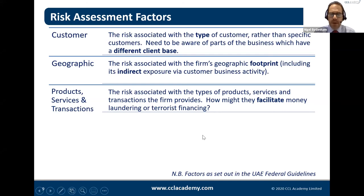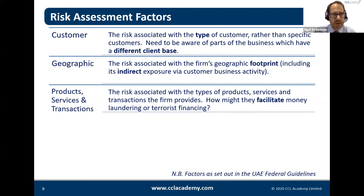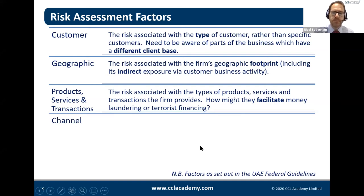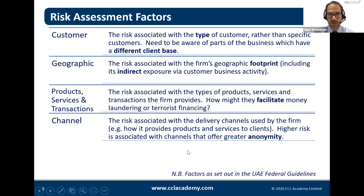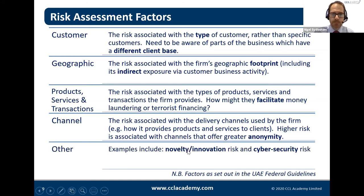The second category is geographic risk — one of the most challenging for firms. It's not just about where you're physically located, such as the DIFC, Dubai, or Abu Dhabi, but about your full footprint and what you're exposed to through your activity and your customers' business activity. Third is the products, services, and transactions you provide. A useful question to ask is: how might they facilitate money laundering? This reframes thinking beyond the assumption that all customers use services legitimately.